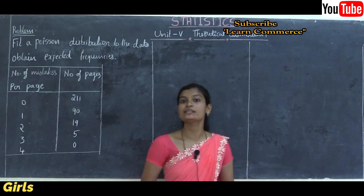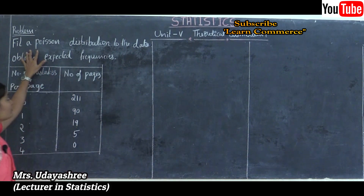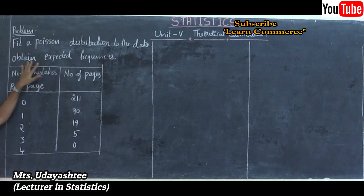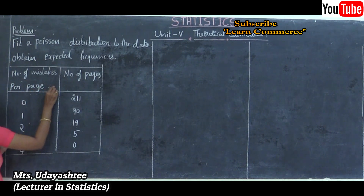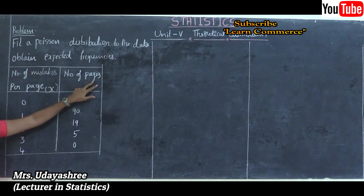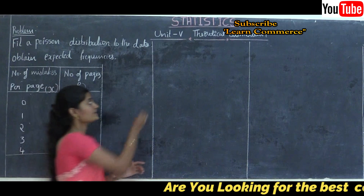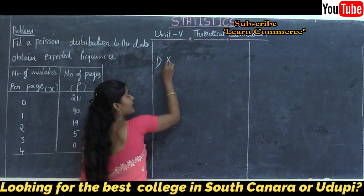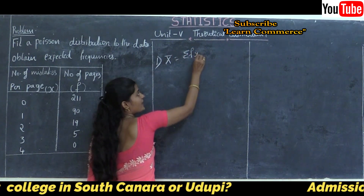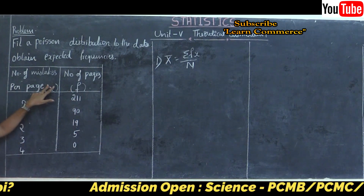Now let's see how to solve a problem using these steps. The problem is: fit a Poisson distribution to the data and obtain the expected frequencies. The first column gives the number of mistakes per page (X) and the second column gives the number of pages (F). The first step is to calculate the mean of the observed frequency distribution using X-bar = ΣFX / N.